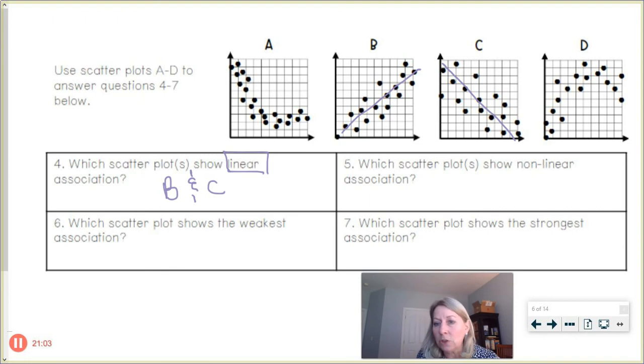Okay. Number five, which scatter plots show nonlinear? A little bit more curve, perhaps, would be A. It's a little curvy. And so is D. So nonlinear for those. Which scatter plot shows the weakest association? The weakest, where are those things scattered the most? Those dots look most scattered in C. So weak association. Weakest was probably letter C. They're kind of scattered about.